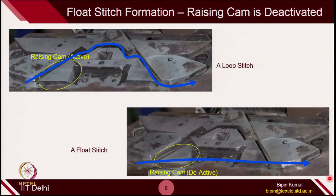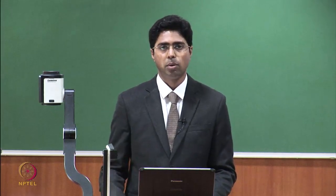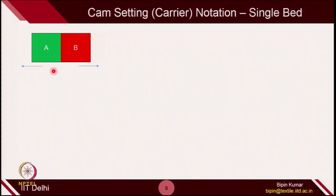Depending on the direction of movement and the settings of stitch cam, clearing cam, and rising cam, a number of fabric designs can be created. Direction is extremely important. We represent 2 blocks for each direction: the right block represents when the cam is moving from left to right, and the left block represents when the cam is moving from right to left. A and B are symbols indicating what type of loops are created — stitch loop, tuck loop, or float loop.